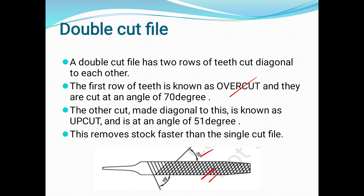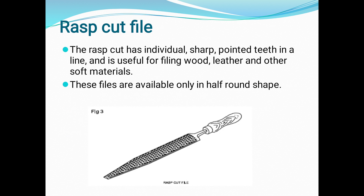In the double cut file, two rows of teeth are cut at angles to each other. The double cut file removes material faster than the single cut file.